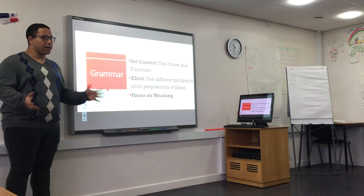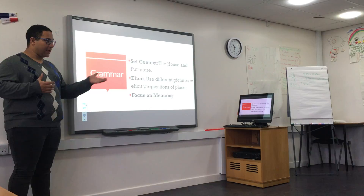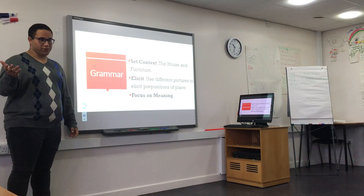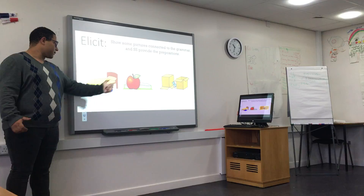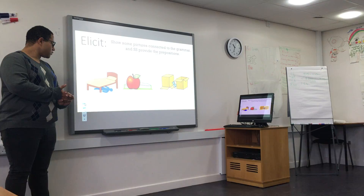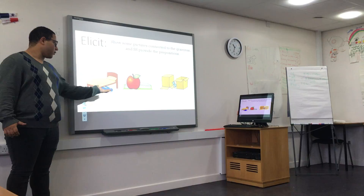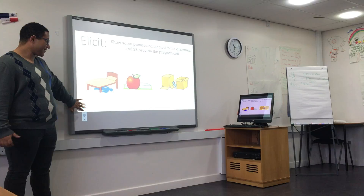The elicit uses different pictures to use the preposition of place. And the focus on meaning is to use different objects of the class or in the house about the different positions. For example, the elicit — we use different pictures about different things. And also the students can help me to identify where the objects are.